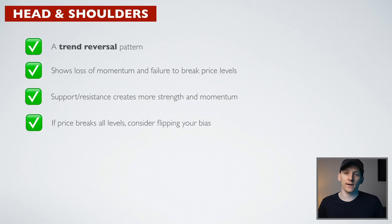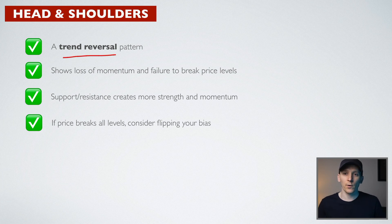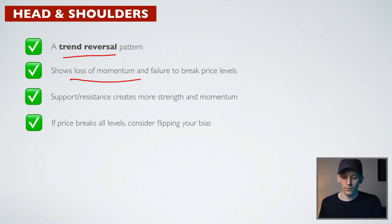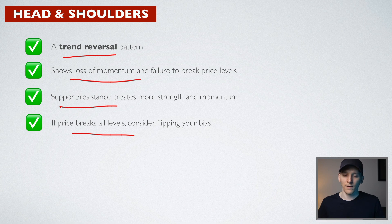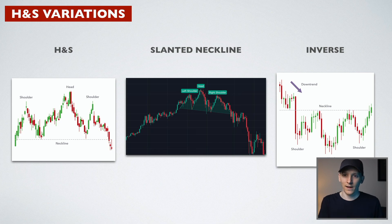Next is a head and shoulders pattern — a reversal pattern in the same vein as a top or bottom. In an uptrend, we look for a head and shoulders to show a reversal from the uptrend into a downtrend. It shows a loss of momentum and a failure to break price levels. If the price breaks all levels, consider flipping your bias from bullish to bearish, as that uptrend may be ending.